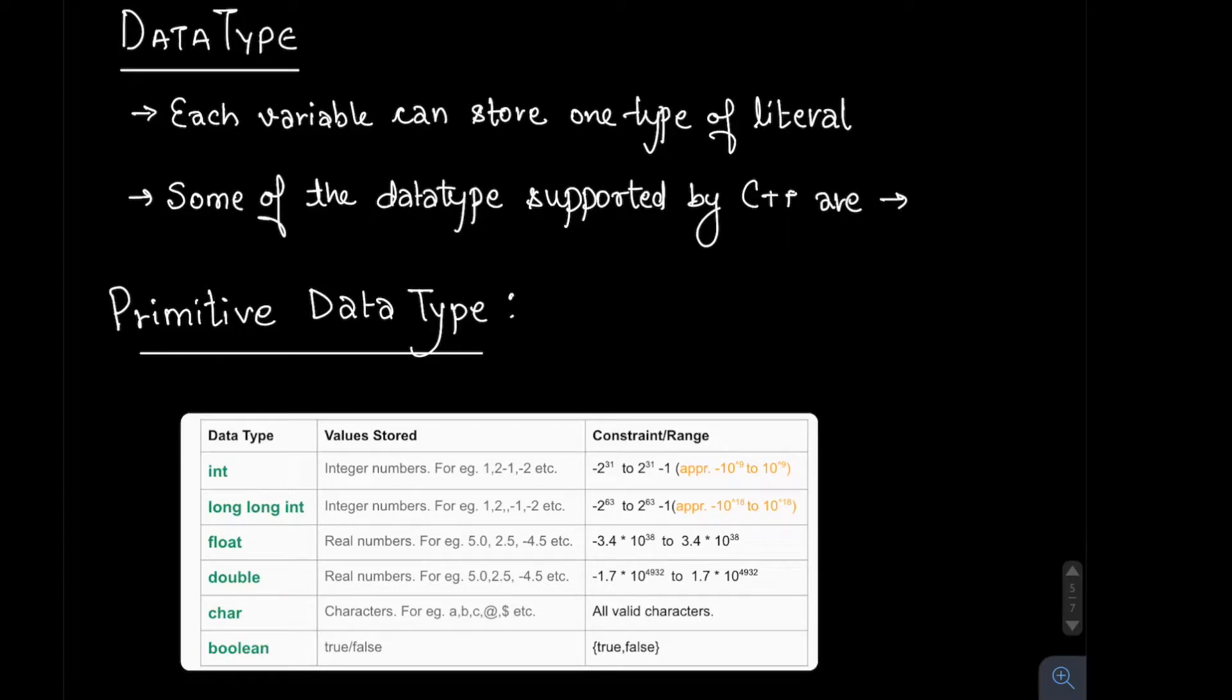Next, we discuss data type. Each variable in C++ can store only one type of literal.